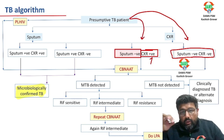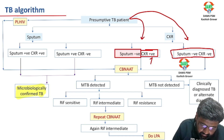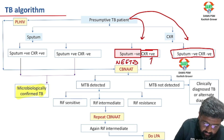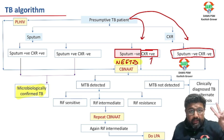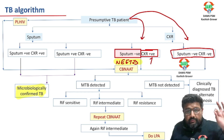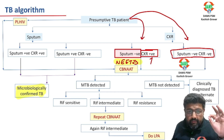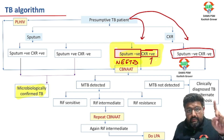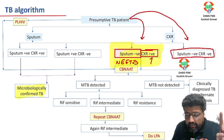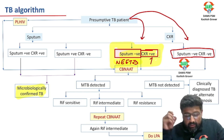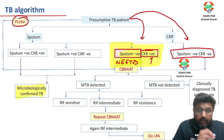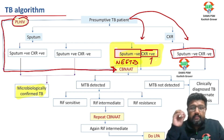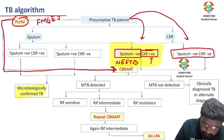In these two scenarios, as a clinician you do a CBNAAT. This was a NEET 2023 question. If you are preparing for FMG or NEET PG, this is very important. In FMG 2023, they asked: if you have a presumptive TB patient who is HIV positive, you do not need to go through the steps — you can directly order a CBNAAT.